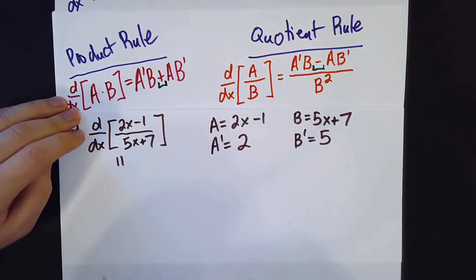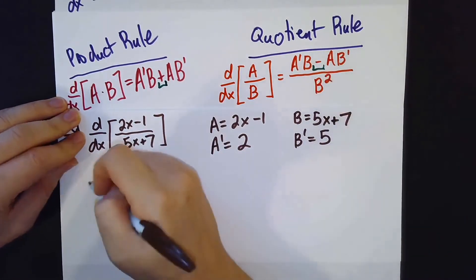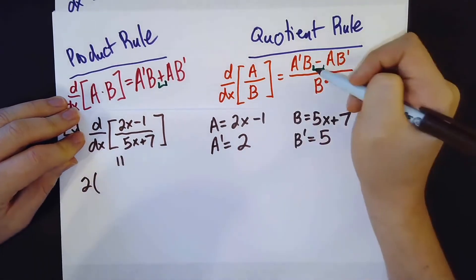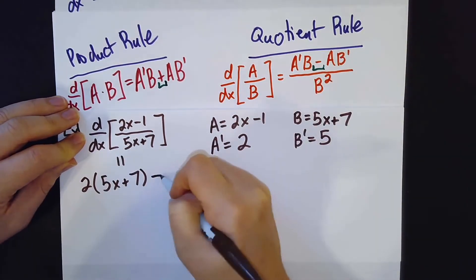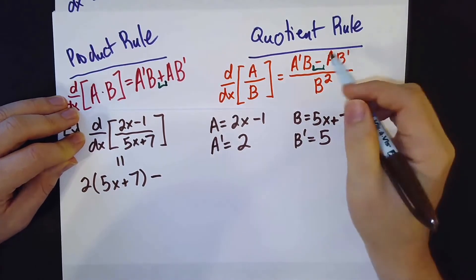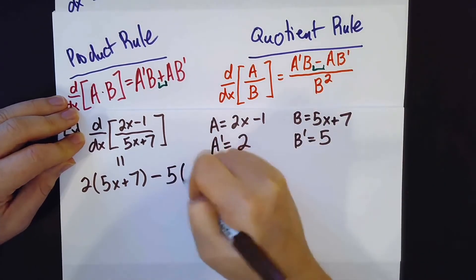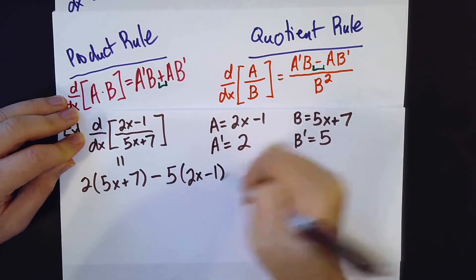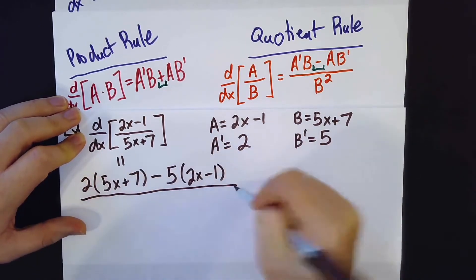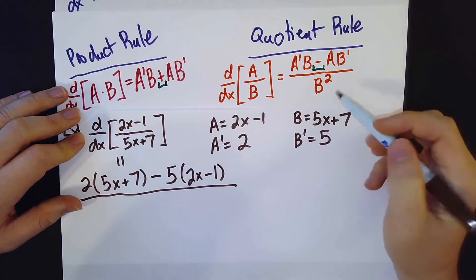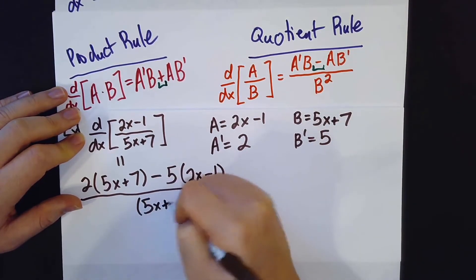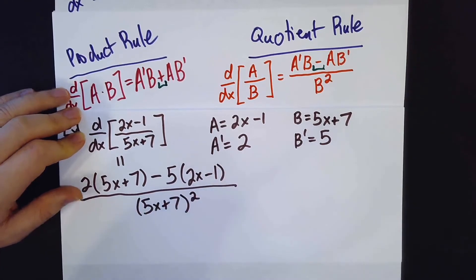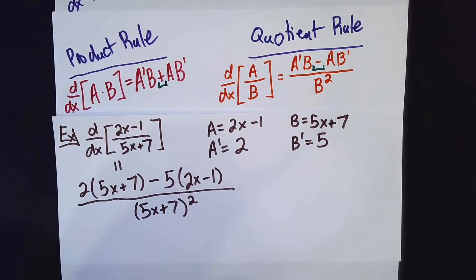So, I am going to get a prime b, so that is 2 times 5x plus 7, minus, and then 2x minus 1 times 5. And then that is all going to be divided by b squared, so that is all going to be divided by 5x plus 7 squared. So this is what we get after we apply the formula.